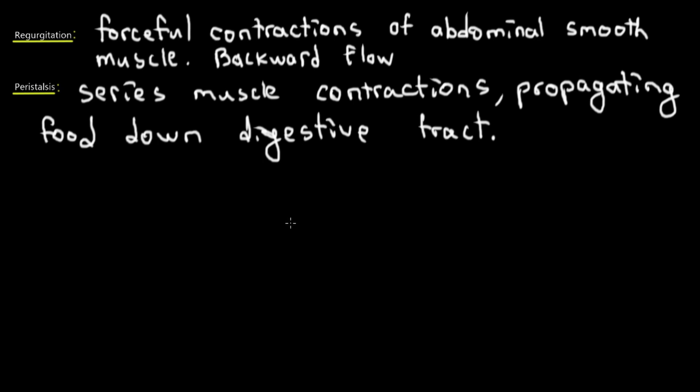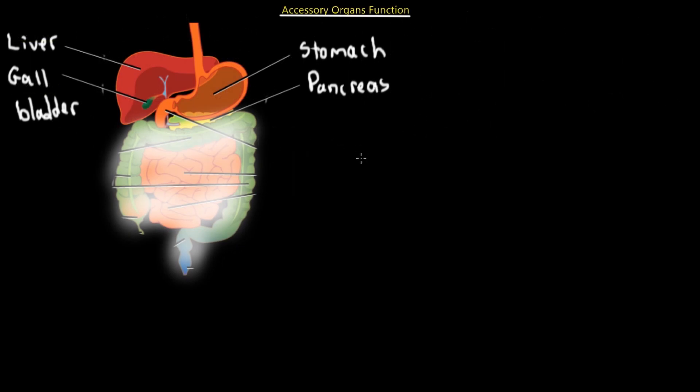For the purposes of this video, peristalsis is when the smooth muscles of the digestive system - the endothelial lining with smooth muscles around it in the esophagus, stomach, small intestines, and large intestines - contract in a manner that pushes food down the digestive tract. The opposite, pushing food back up, is called regurgitation.